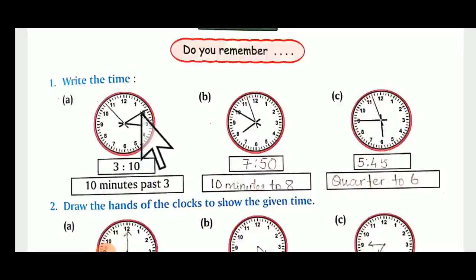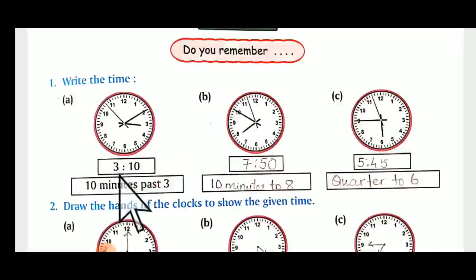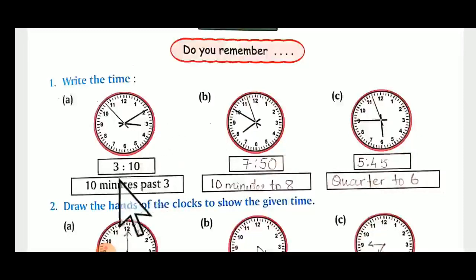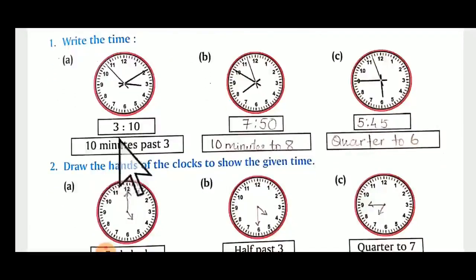While writing the time in minutes, for one it is five, for two it is ten, for three it is fifteen — we go according to table of five, which you studied in the last class. So the smaller needle is towards three and the bigger needle is towards two, that means it is three ten. How will you write in words? Ten minutes past three.